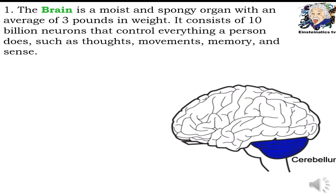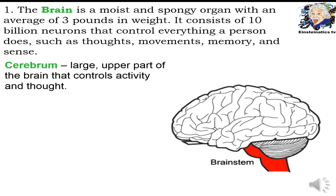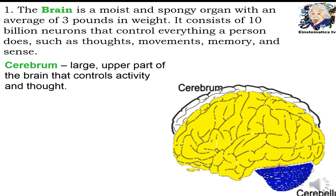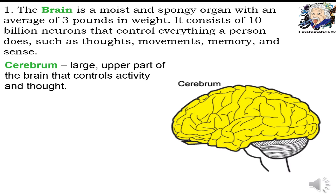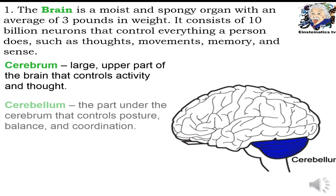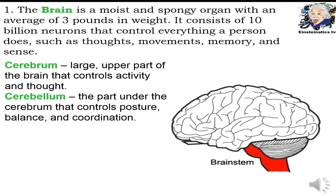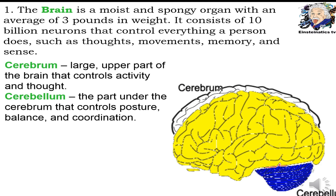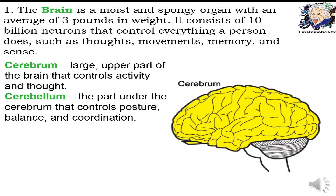The brain has three main divisions. The first one, the cerebrum, is the large upper part of the brain that controls activity and thought. The second one, the cerebellum, is the part under the cerebrum which controls posture, balance, and coordination.